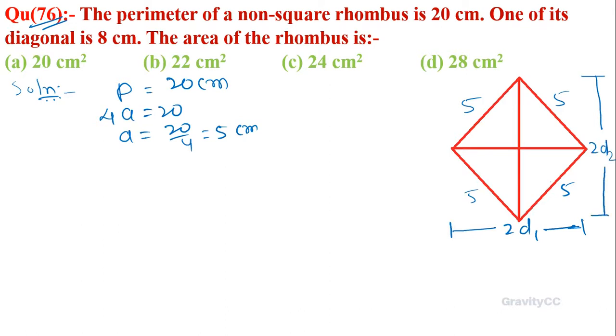One of the diagonal length 8 is given, means 2d1 equals suppose 8, so we have d1 equal to 4 cm.